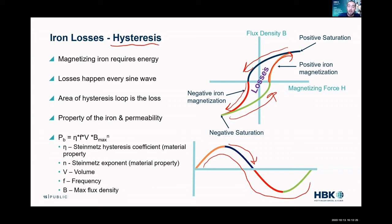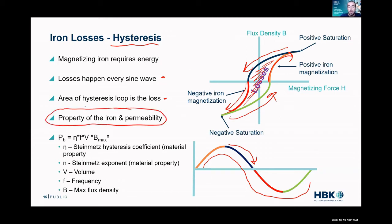The area of this loop ends up becoming losses, because there's energy required to turn the iron into a magnet and energy required to turn the magnet off. So losses happen every sine wave — the area of that loop is the loss — and this is really a physical property of the iron and its permeability.